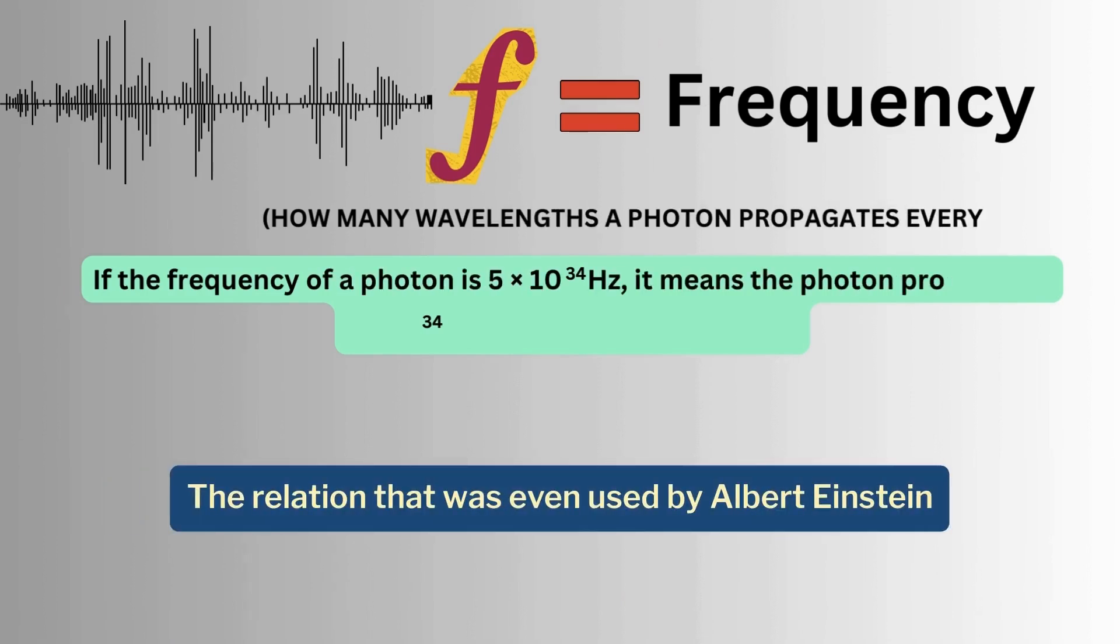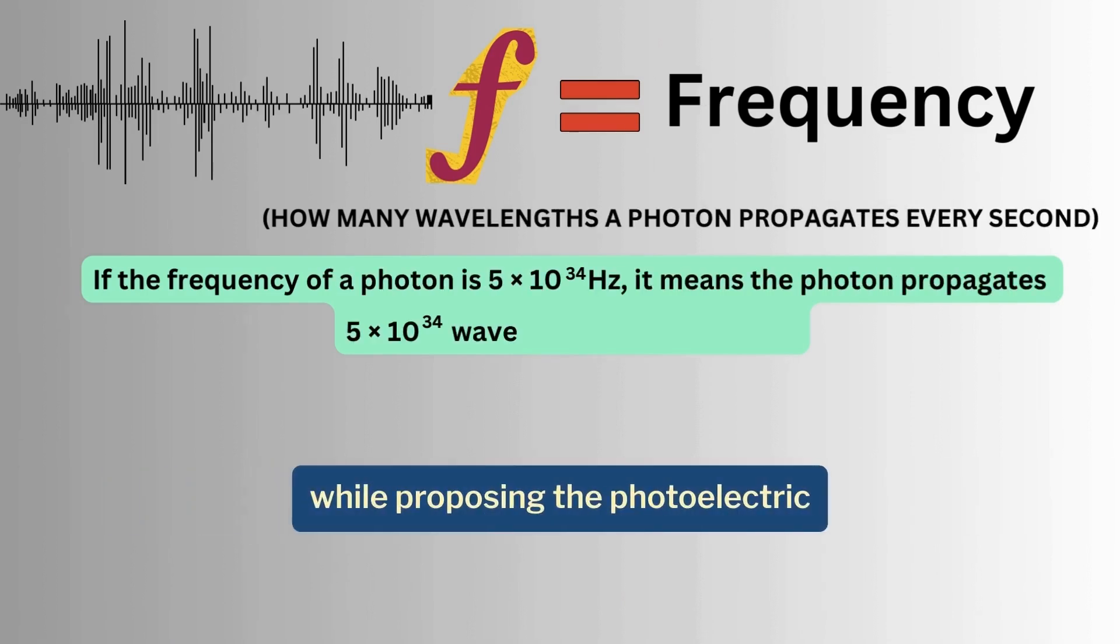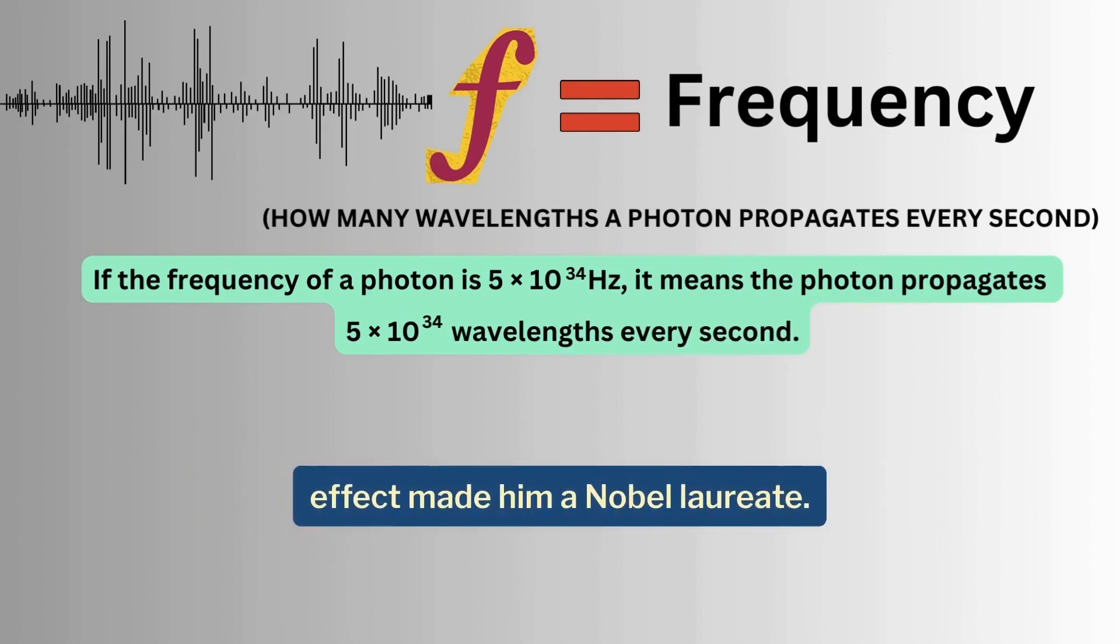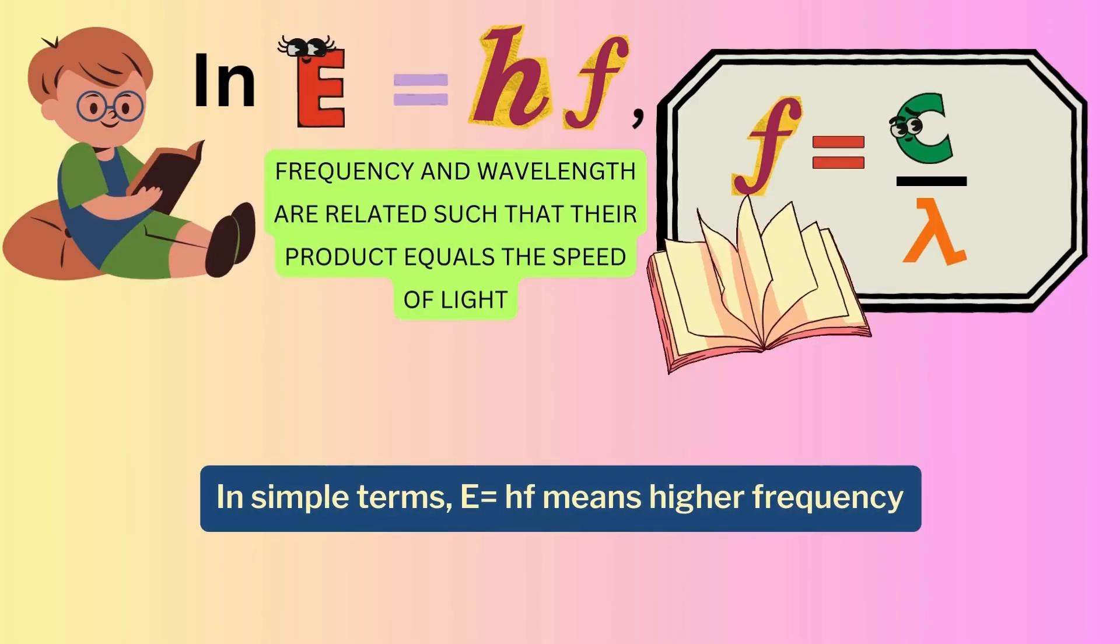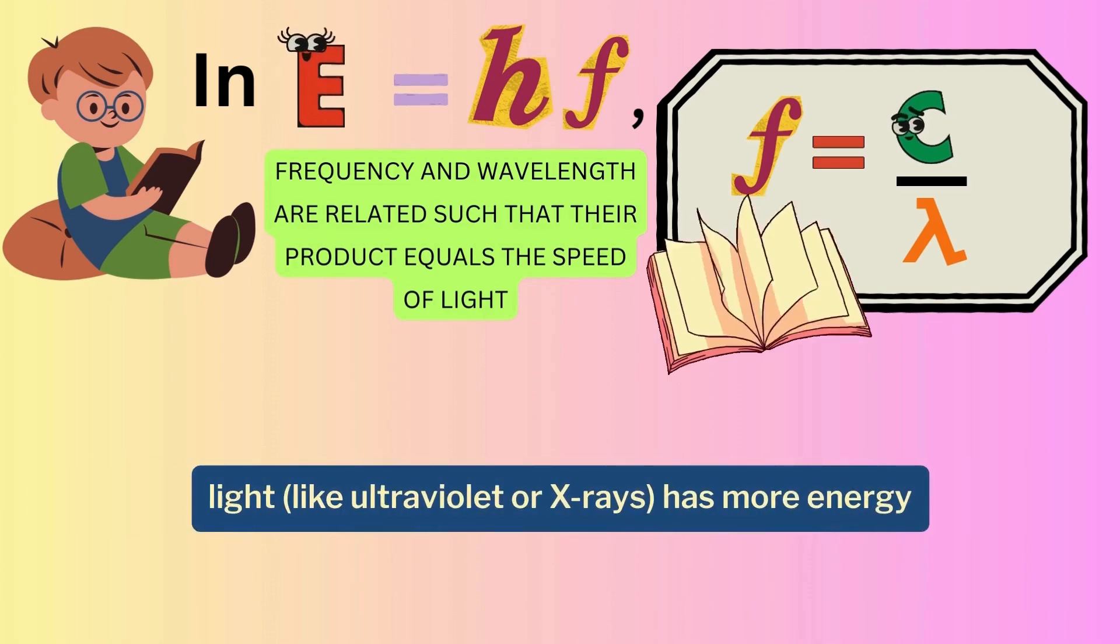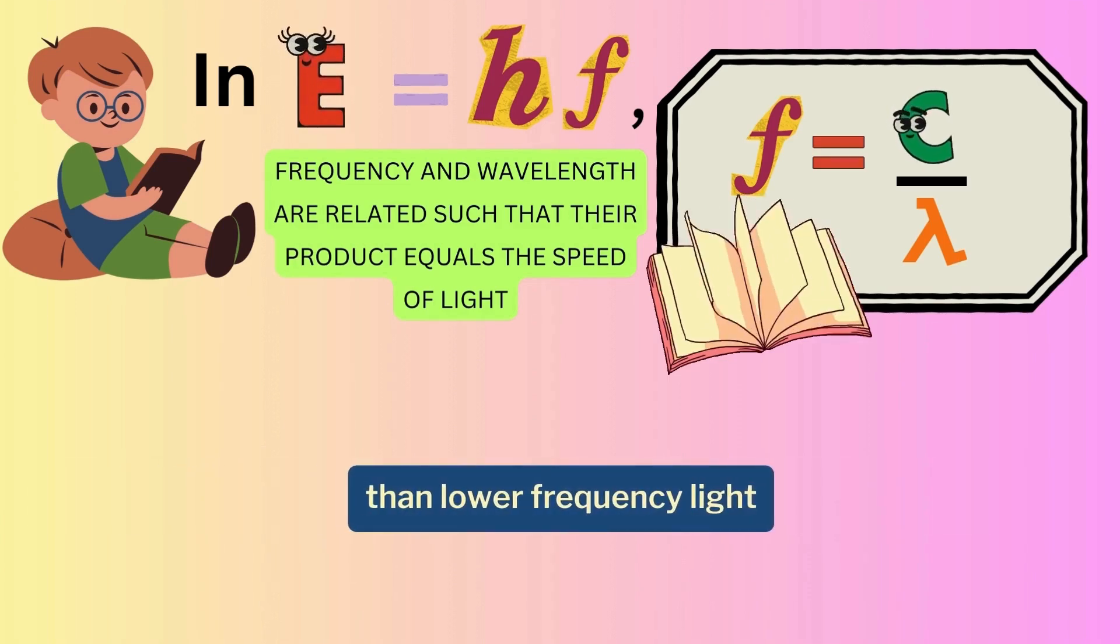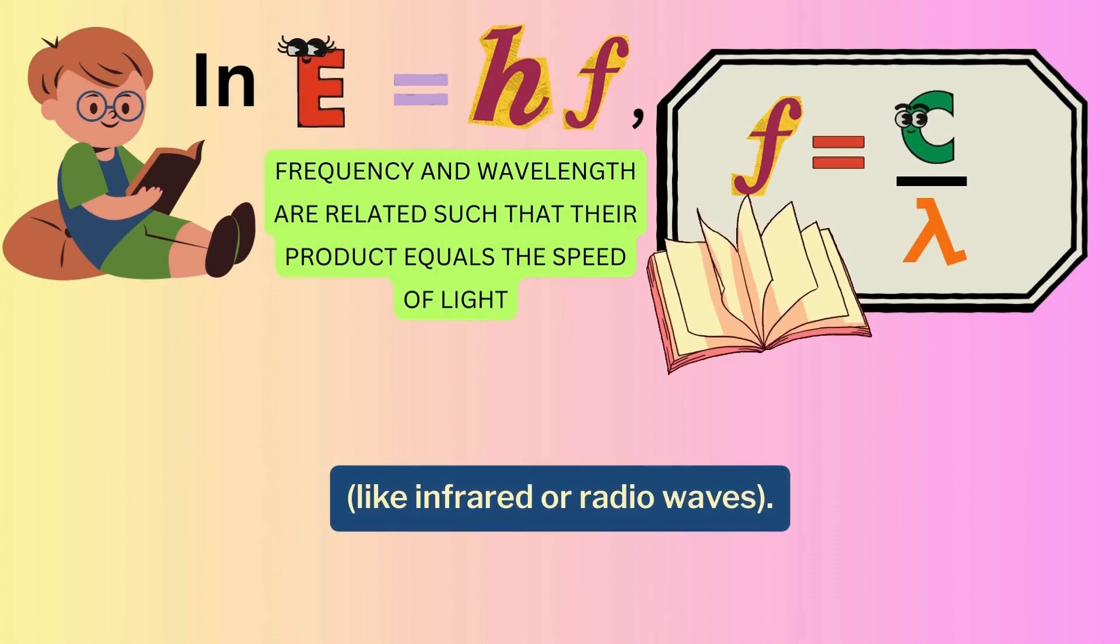The relation was even used by Albert Einstein while proposing the photoelectric effect, which made him a Nobel laureate. In simple terms, E equals hf means higher frequency light, like ultraviolet or x-rays, has more energy than lower frequency light, like infrared or radio waves.